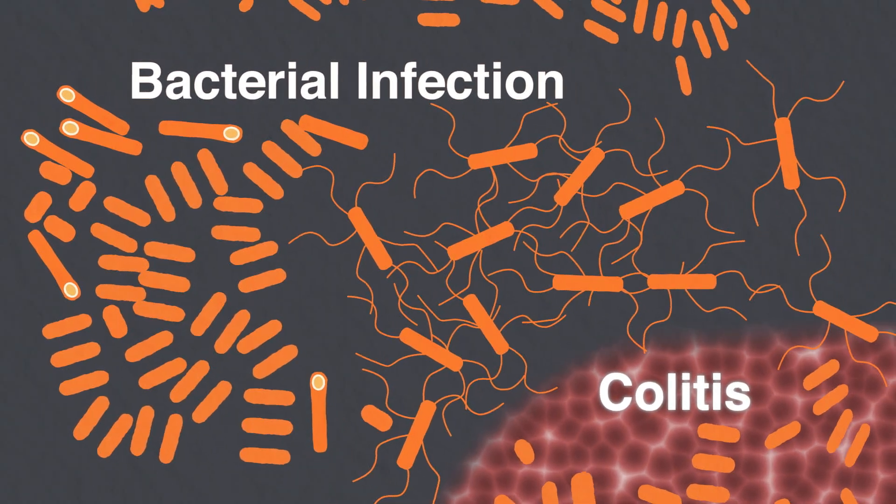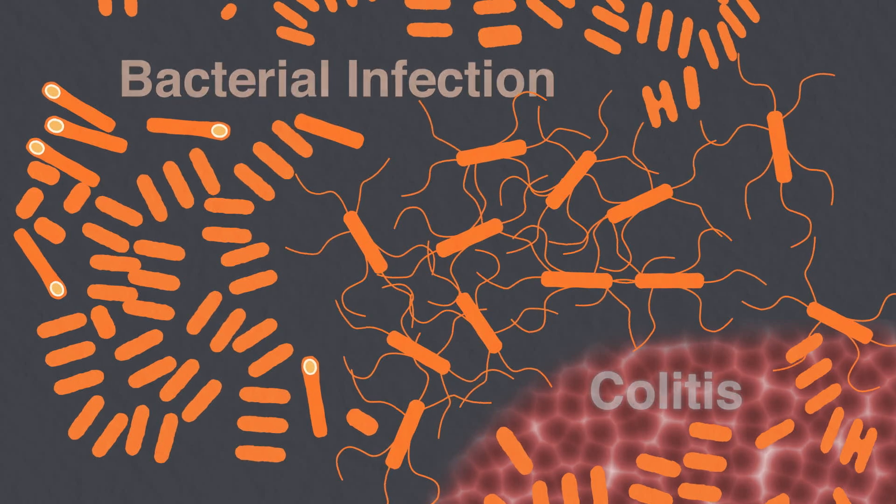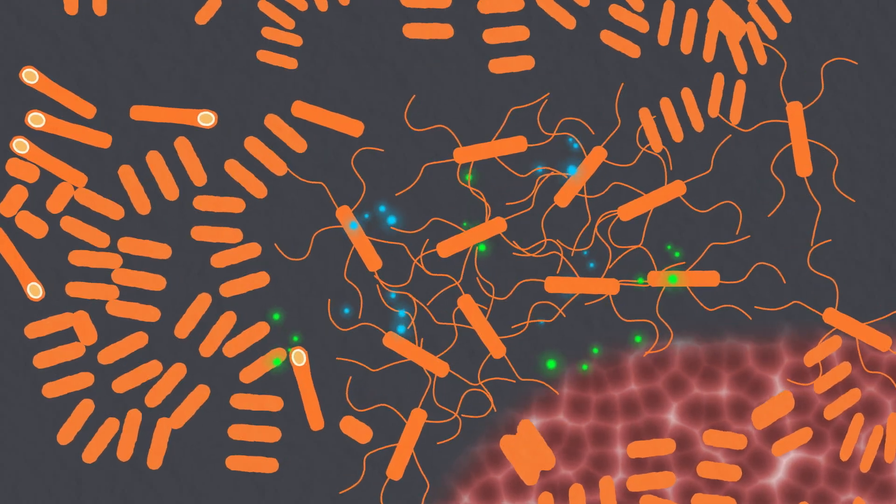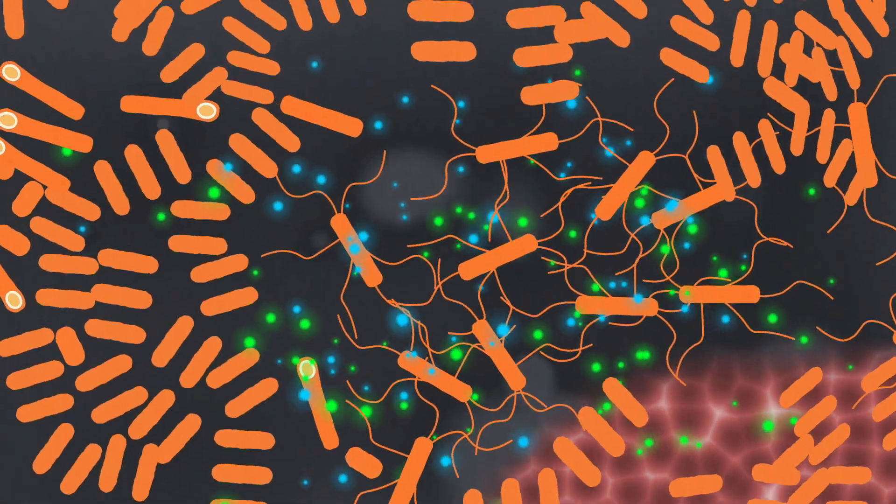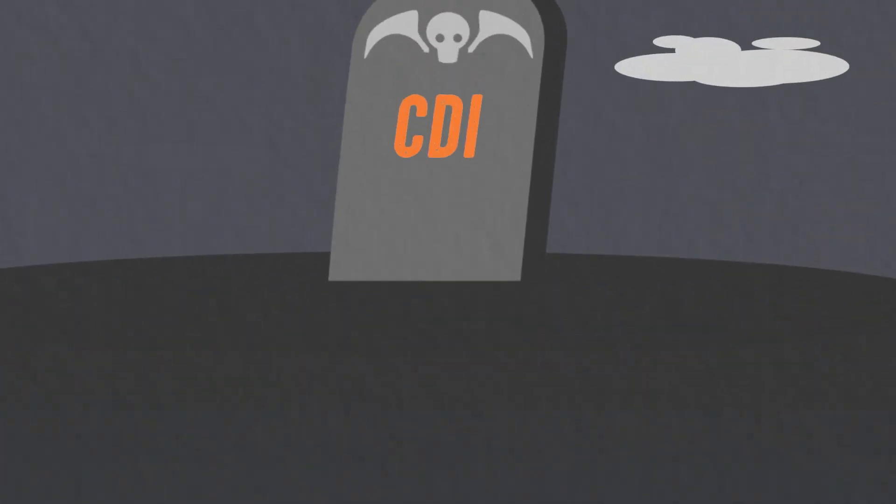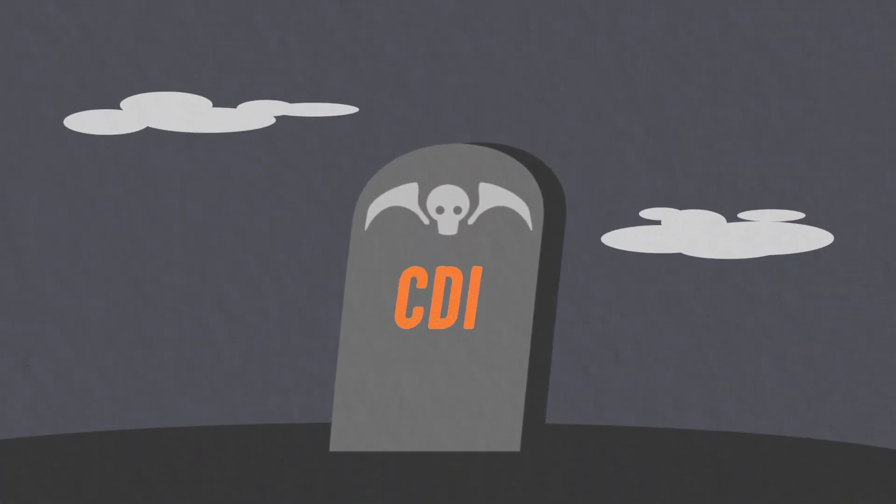When the gut's beneficial bowel bacteria are disrupted, the C. diff. bacterium can multiply, producing toxins that damage the bowel and cause intestinal symptoms. In very severe cases, C. diff. infection can even result in death.